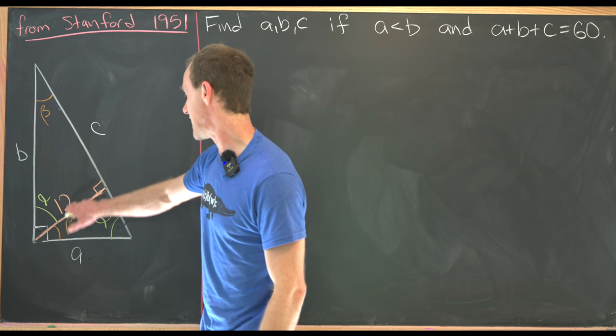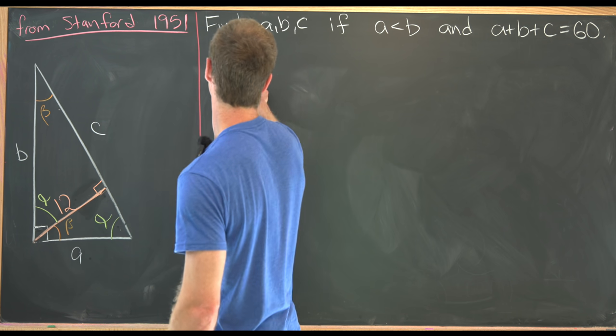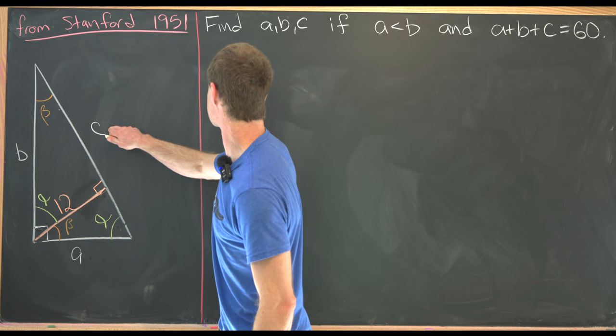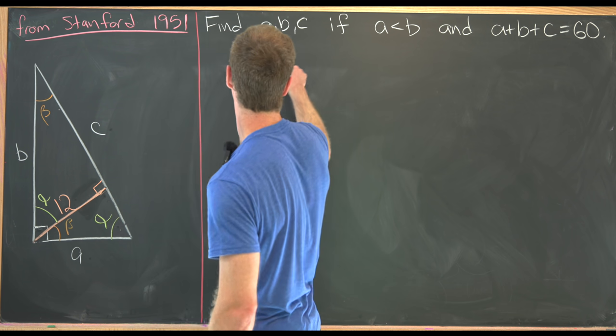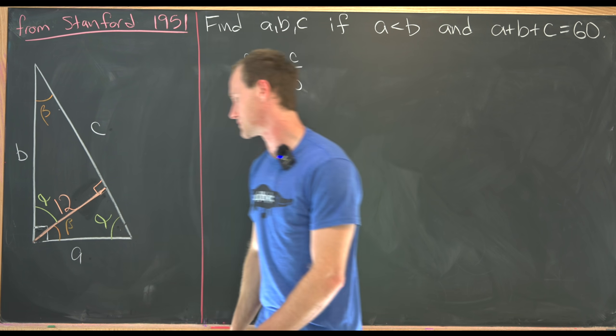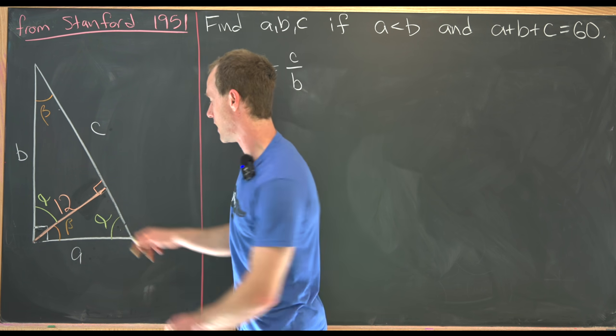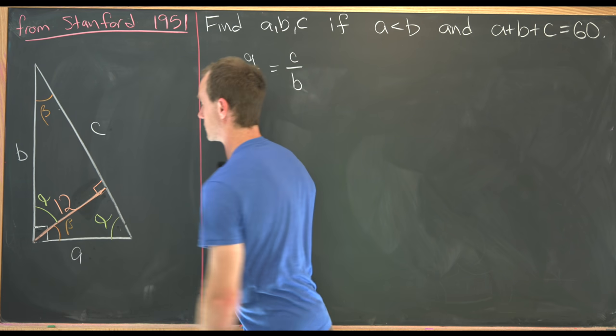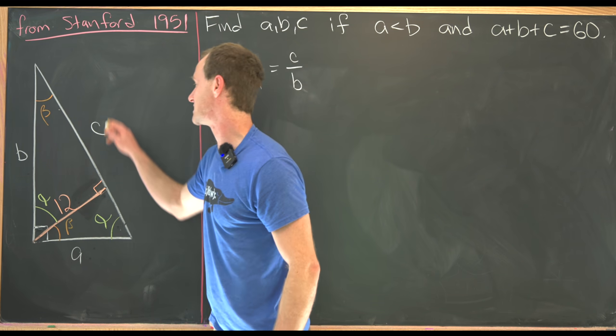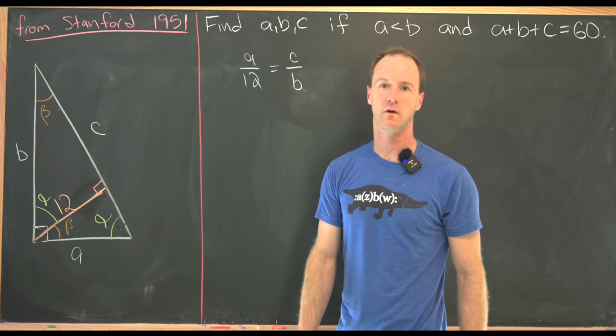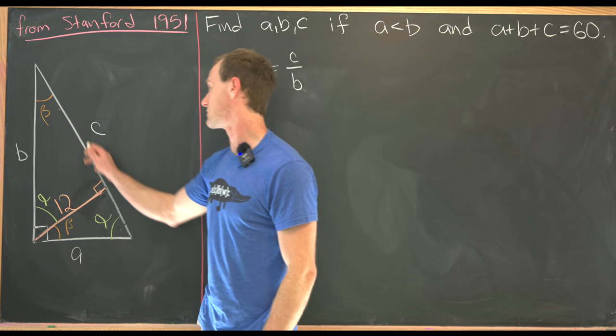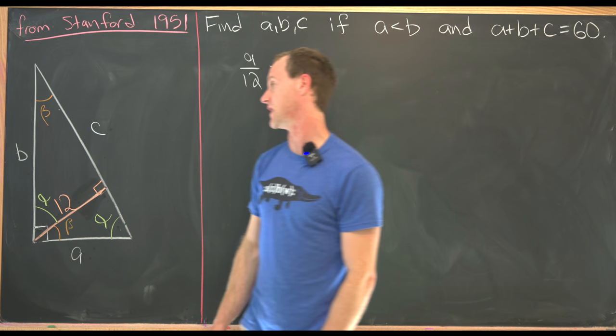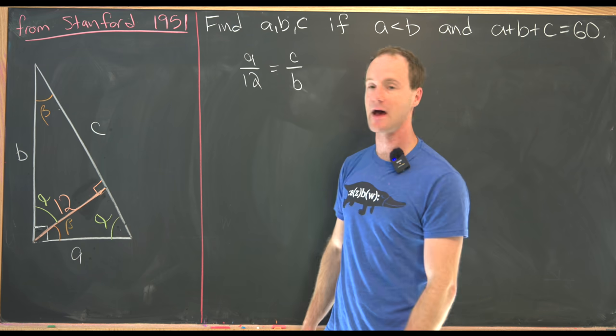And in fact, we know that A divided by 12 is the same thing as C divided by B, just because the roles being played by A and 12 in this small triangle, and B and C in the triangle as a whole. We don't need to use the similarity of this second kind of inner triangle, but we also have that.